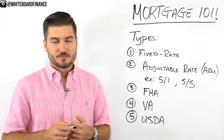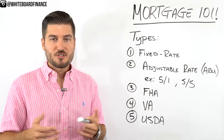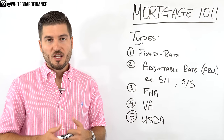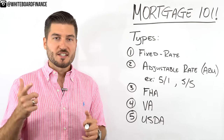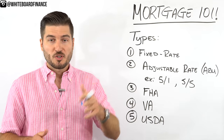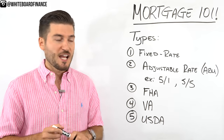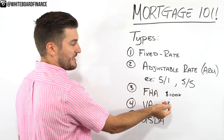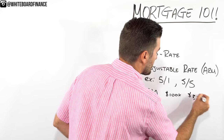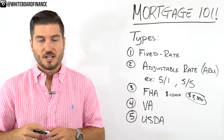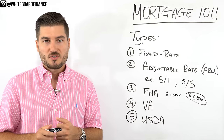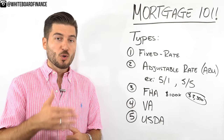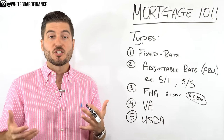Number three is the FHA Loan, insured by the Federal Housing Administration. This allows down payments as low as 3.5%. So on a $100,000 house, you only need $3,500 to get into the property. This is typically for people with lower credit scores. You will pay PMI, but it's a good way for people with lower credit scores and less than 20% down to get into their first home.